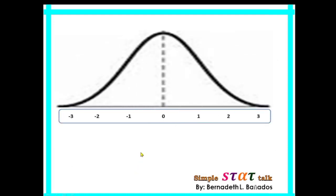In the normal curve, these are the values for the z-scores: 3, 2, 1, and going to negative 3. Ito lang yung mga value ni z-scores. Wala ng 10, wala ng ibang number. It ranges from negative 3 going to positive 3.